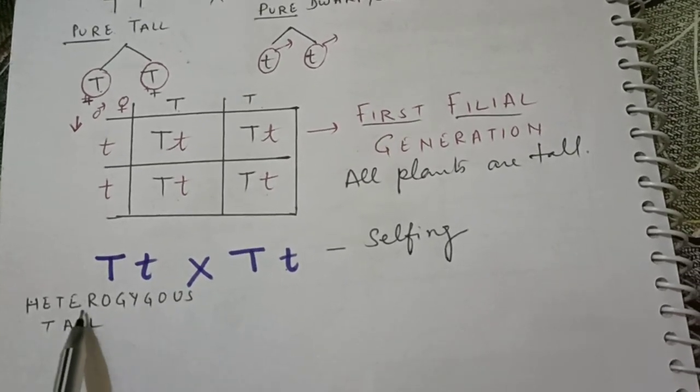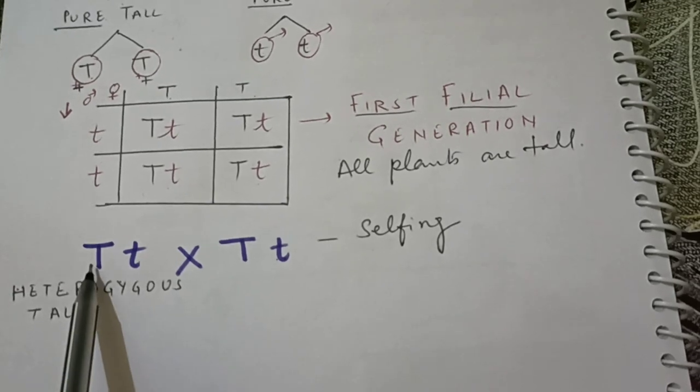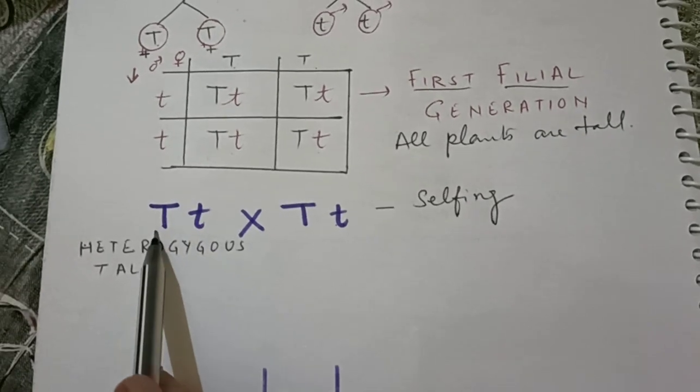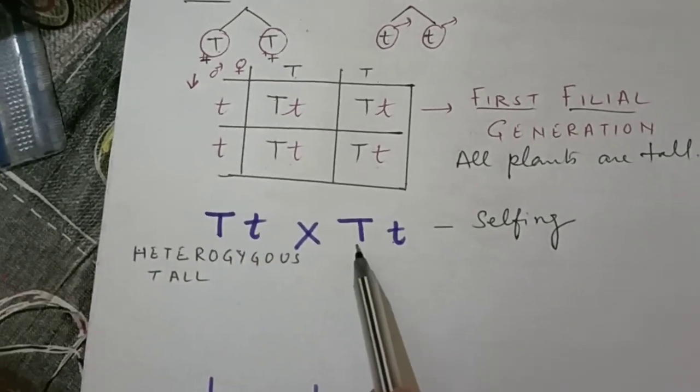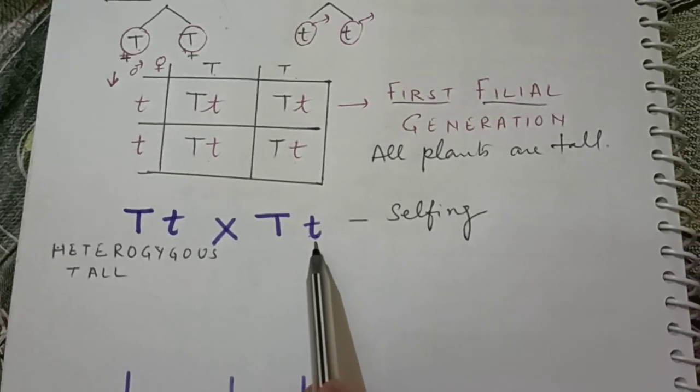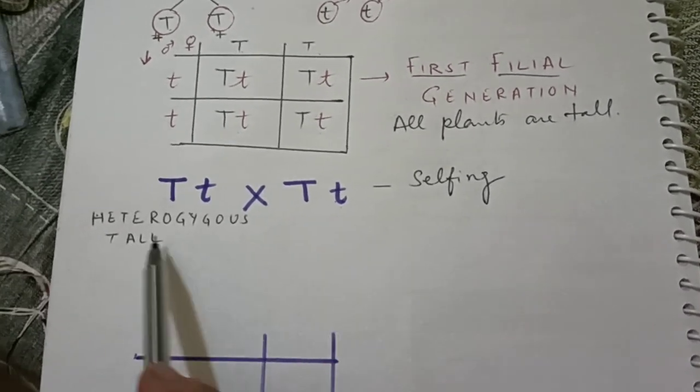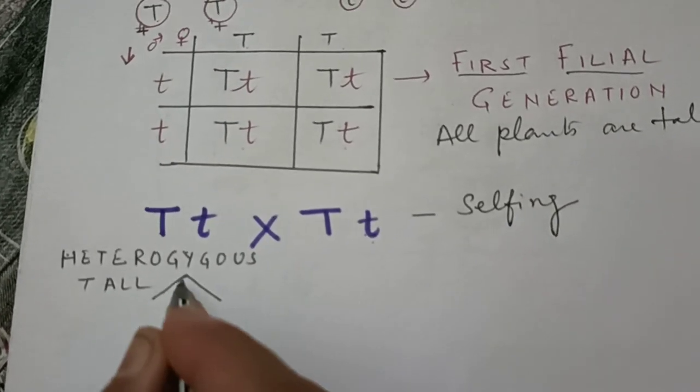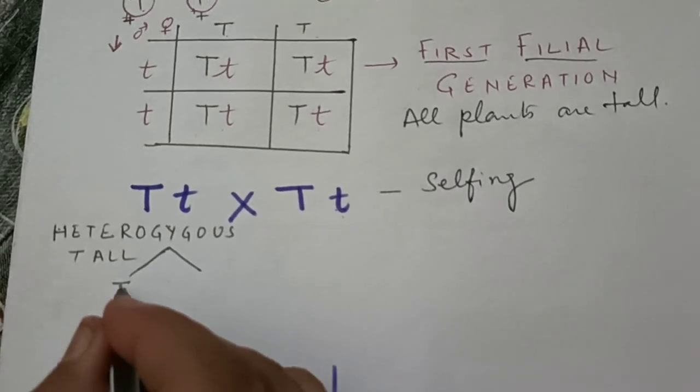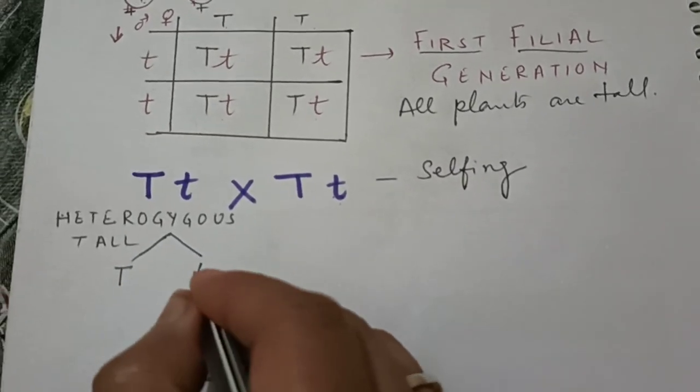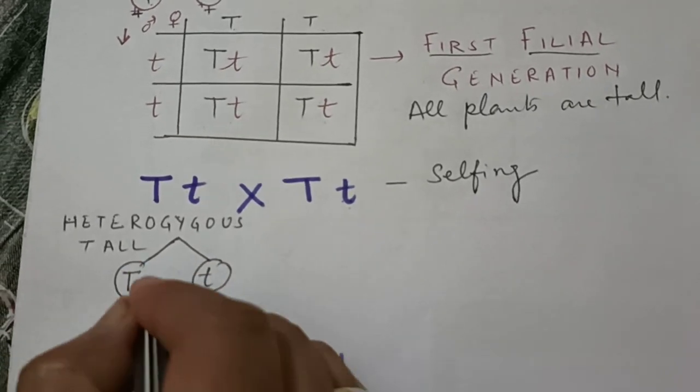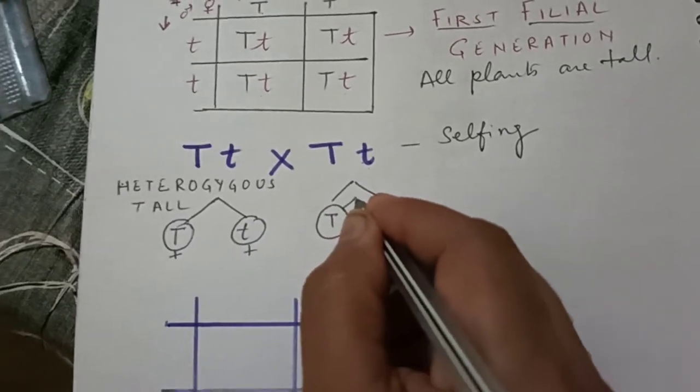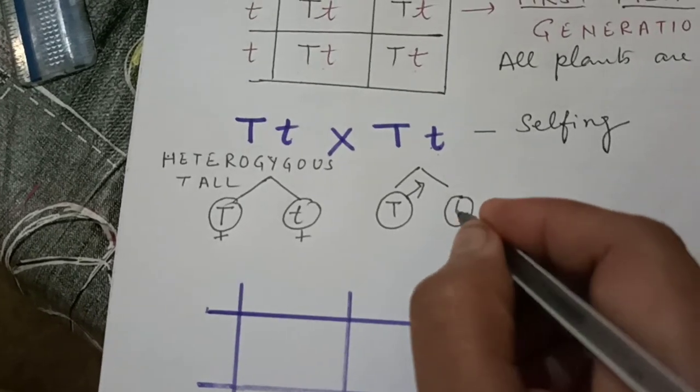Just below it I have written heterozygous tall, means that two alleles are not similar for this character. So this is the reason why I have not mentioned pure, it is heterozygous. Now next step, again just like the previous way, will make gamete capital T and small t female, and again capital T and small t male.